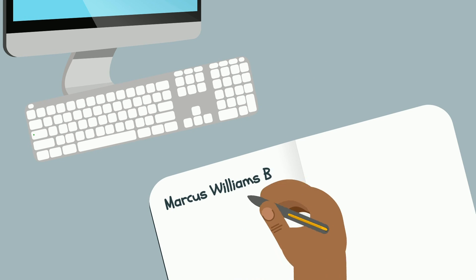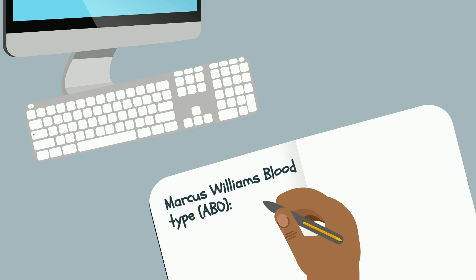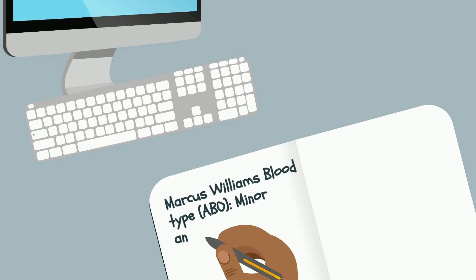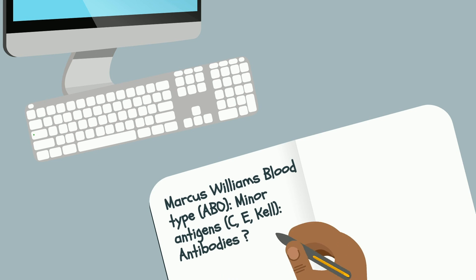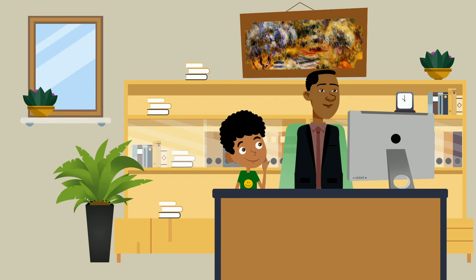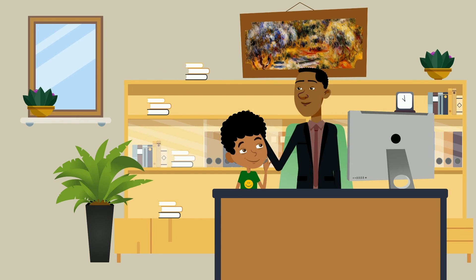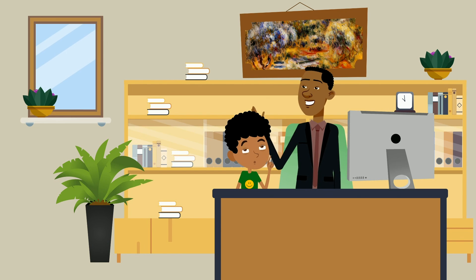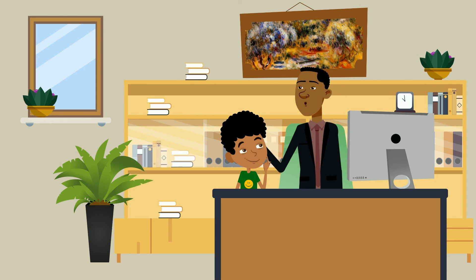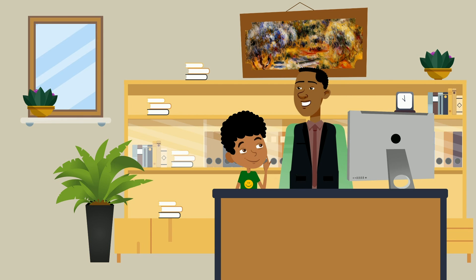People with sickle cell disease can help doctors make the best decisions for them by knowing their blood type and minor antigens — especially the ones in the C, E, and KEL group — and whether they ever formed any antibodies to any major or minor antigens. We can ask Dr. Smith to help us fill in this information about your blood so we can remember it and keep a record to show your doctors.